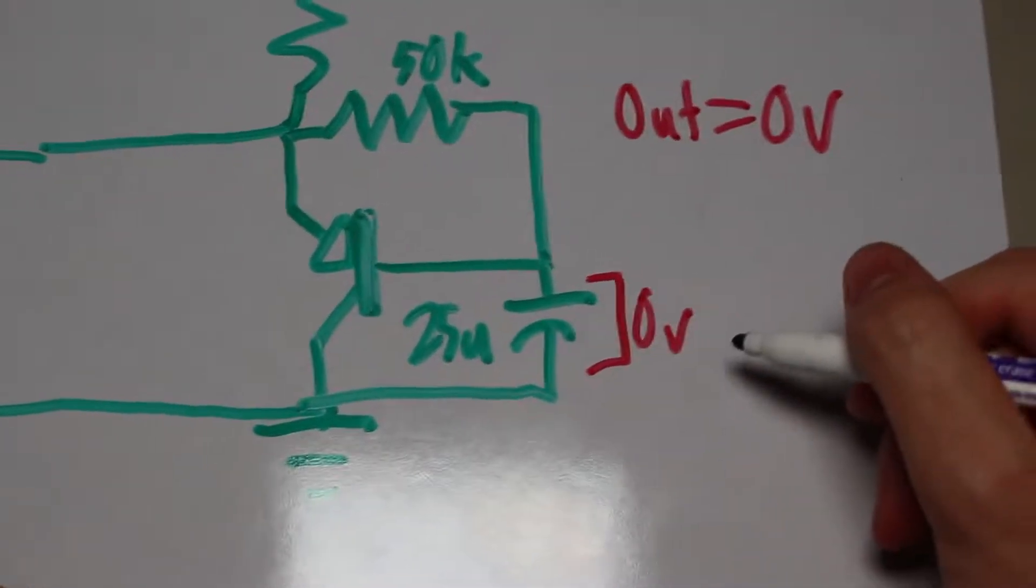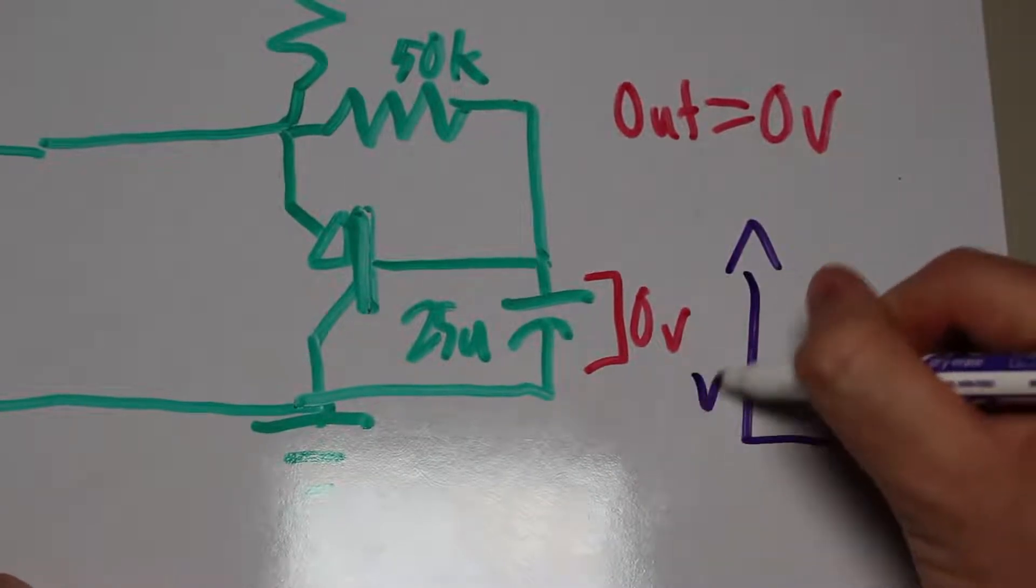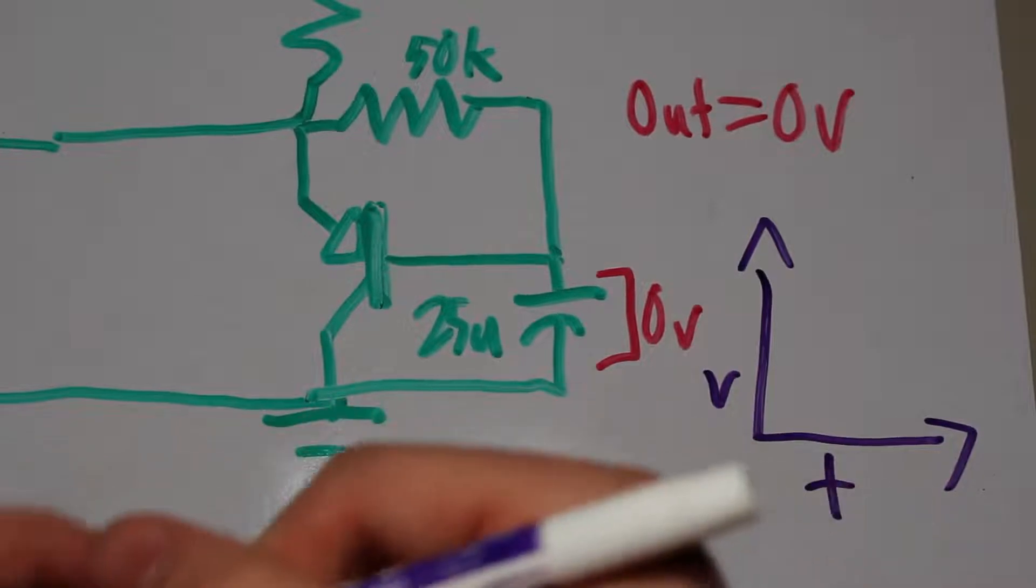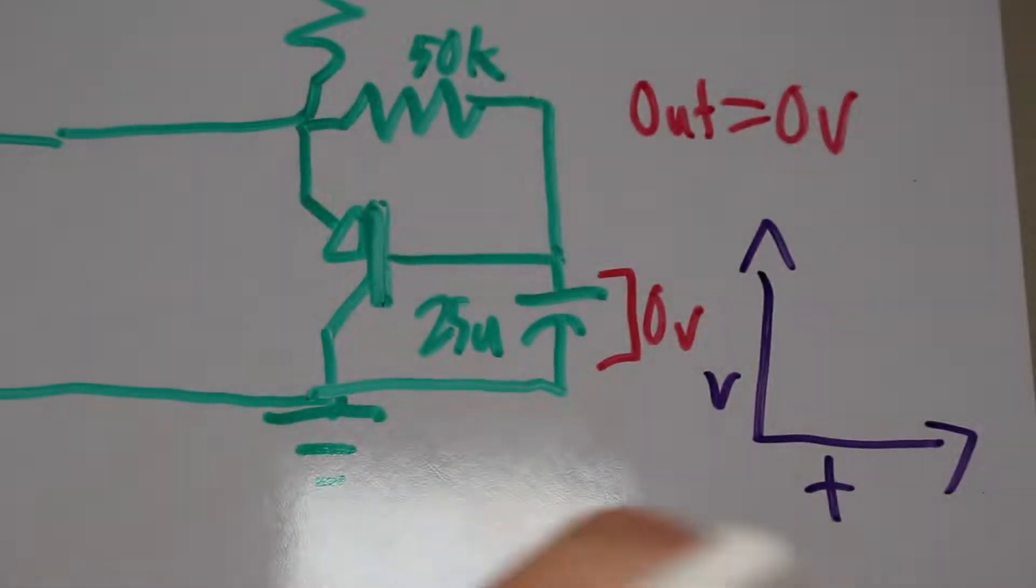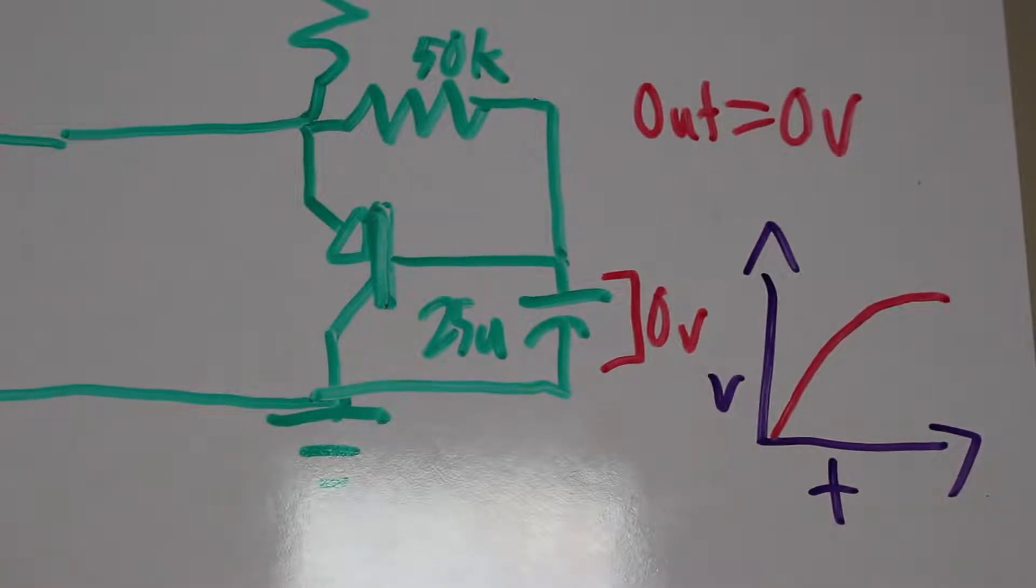Meanwhile, the capacitor will be charging, and as it rises, it will cause the transistor to conduct less, and therefore causes the adjust and output pins to be higher. Finally, the capacitor will charge to the resistor divider's voltage and shut off the transistor.